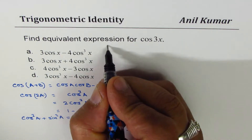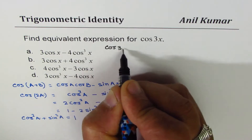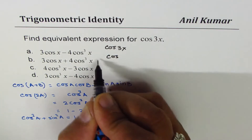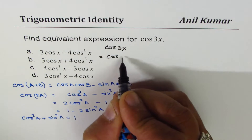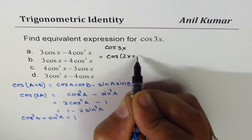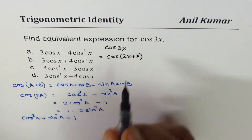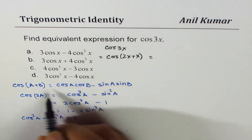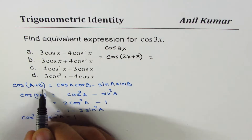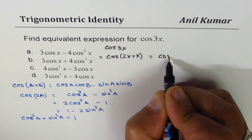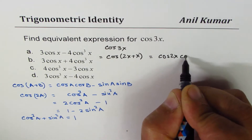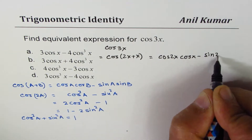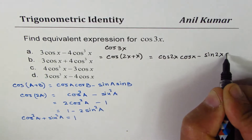Let's write cos 3x as cos(2x + x) to begin with. This can be expanded using the cos(a+b) formula, giving us cos 2x · cos x − sin 2x · sin x.